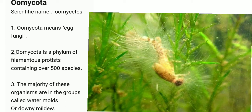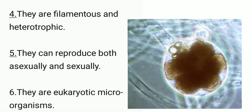On the screen, you can see the image of the Oomycota. Point 4: They are filamentous — they have filaments — and they are heterotrophic, meaning they depend for food on other organisms.